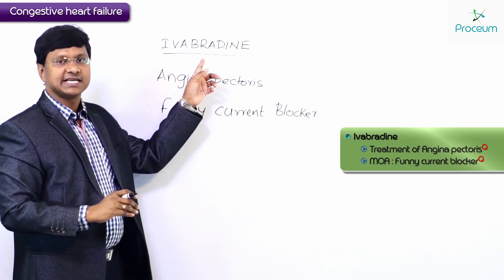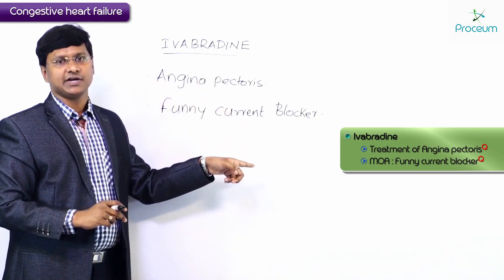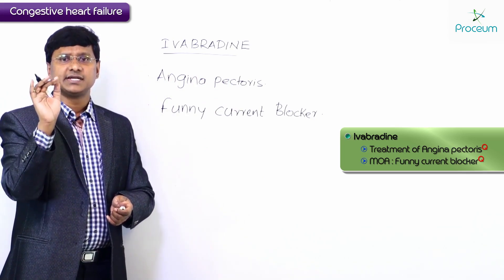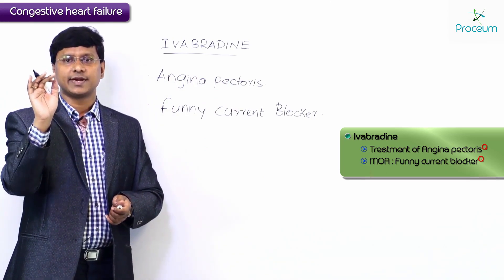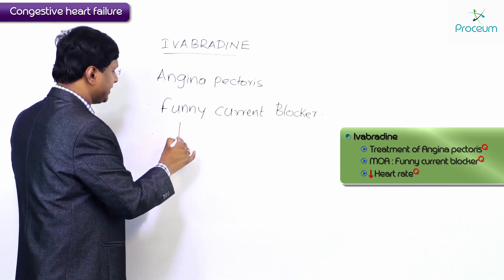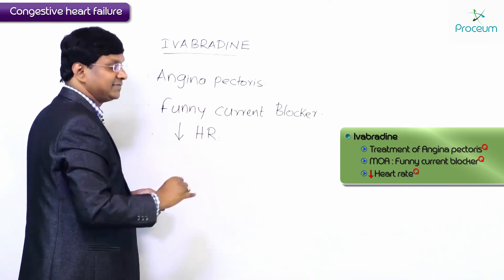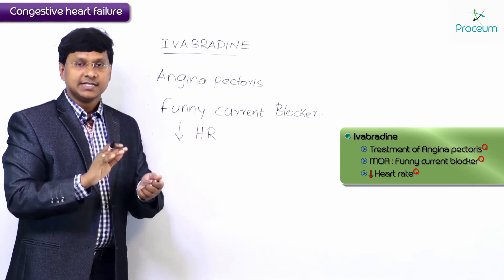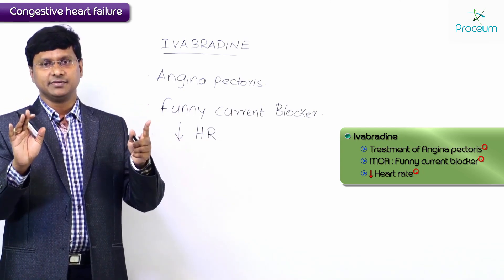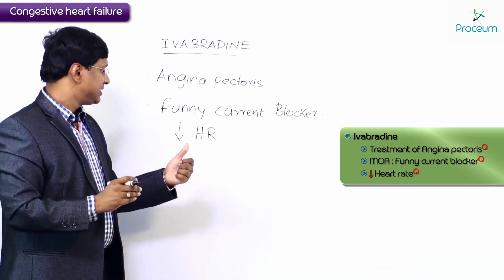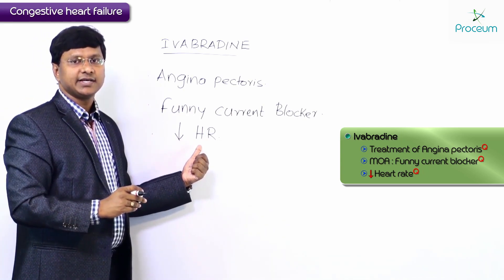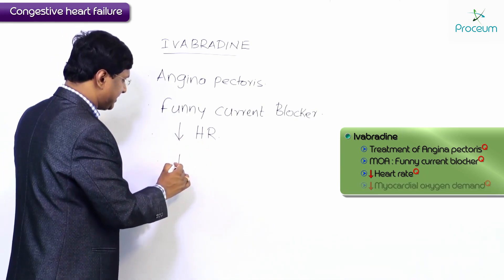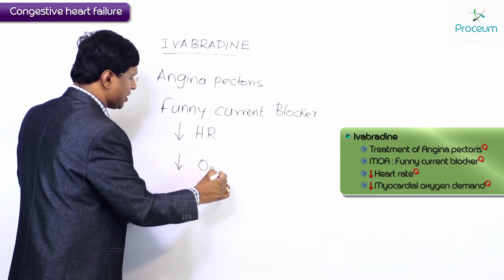The use of ivabradine in congestive heart failure is as follows: ivabradine reduces the heart rate of the individual. When it causes reduction of heart rate, the advantage in patients with congestive heart failure is that it will decrease the myocardial oxygen demand.